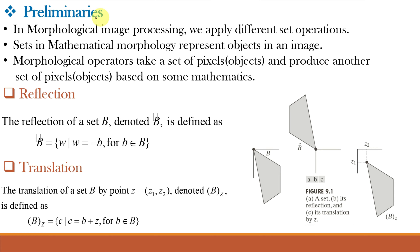Now let us understand some preliminaries of morphological image processing. The morphological techniques treat an image as a group of sets. If there are two objects in the image, then there are two different sets. In morphological image processing, we apply different set operations. These sets in mathematical morphology represent objects in an image. The morphological operators take a set of pixels or objects and produce another set of pixels or objects based on some mathematics. The concepts of set reflection and translation are used extensively in morphology.